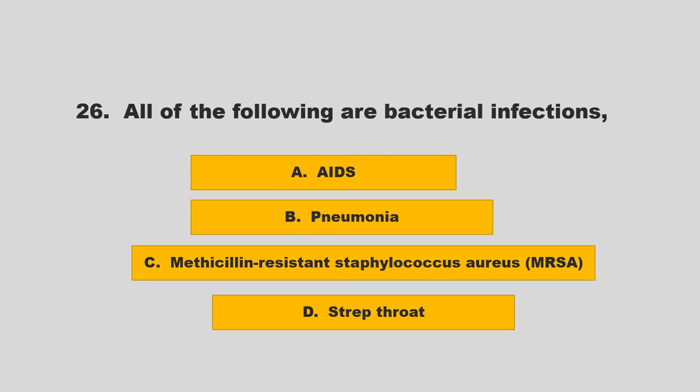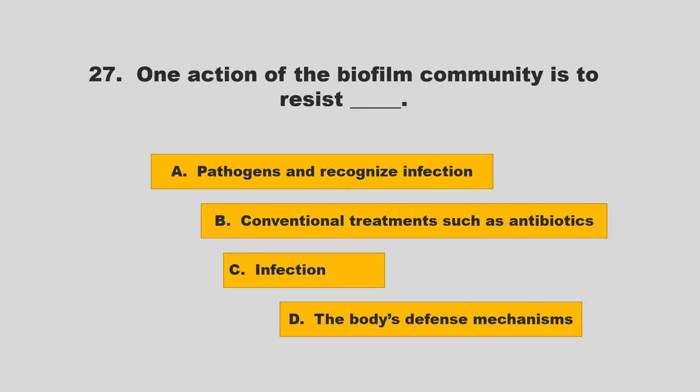All of the following are bacterial infections except: AIDS, pneumonia, methicillin-resistant Staphylococcus aureus (MRSA), or strep throat. The correct answer is C: MRSA — wait, you are correct that MRSA is the answer indicated.